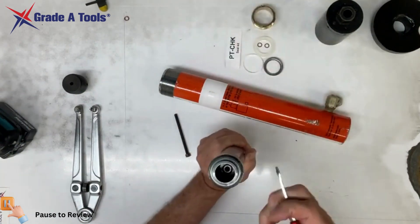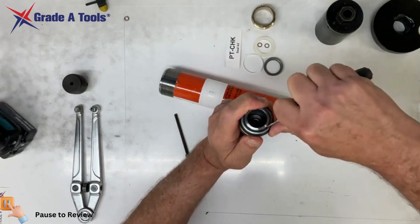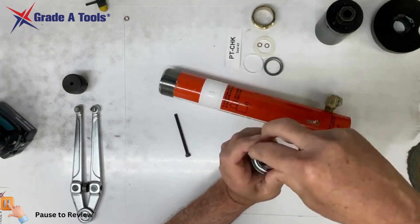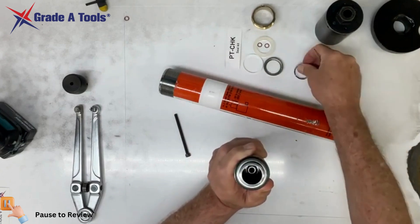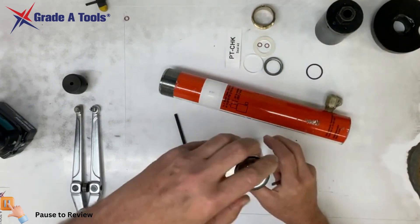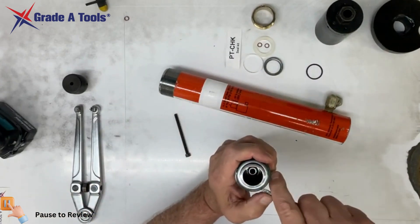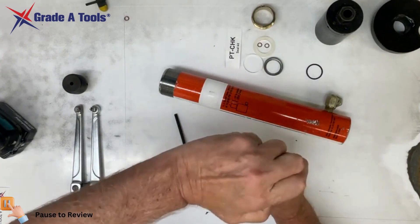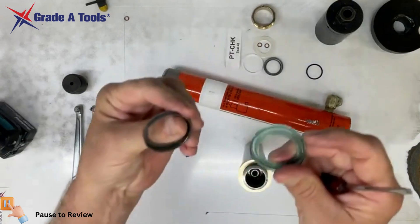At this point, I normally use a small screwdriver to remove the spiral snap ring. Then we'll remove our seal. Here's the old seal.